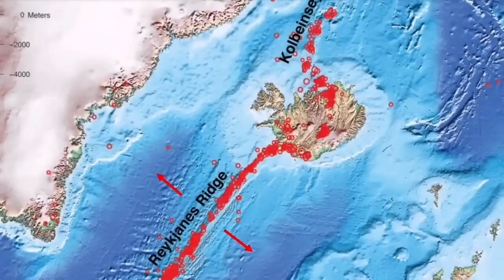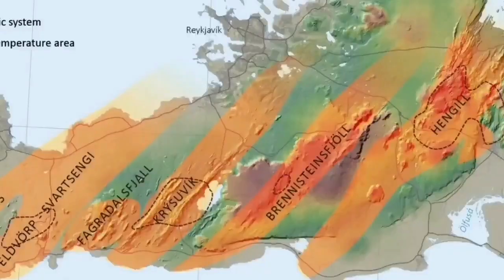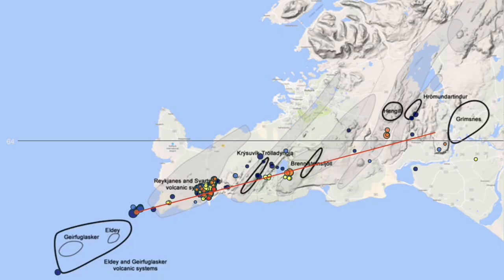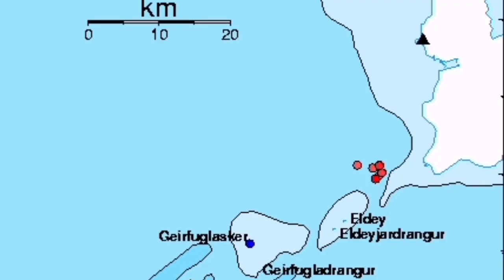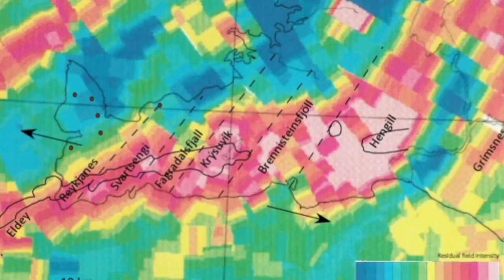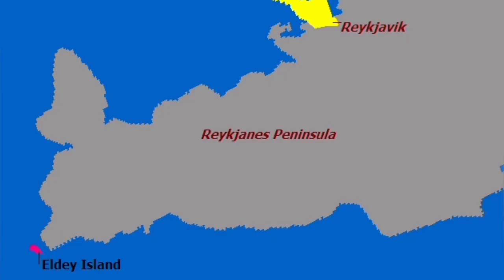These eruptions happen underwater most of the time, like what we have in the Reykjanes Ridge, which is a plateau inside the Atlantic Ocean. Part of it reaches the land, and those volcanic systems are practically the same as those we have on land. One of them is the LD volcanic system, similar to the Svartsengi or Fagradalsfjall volcanic system or Hengill. This can potentially erupt inside the ocean.